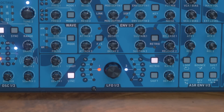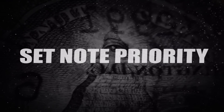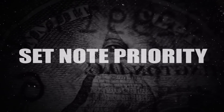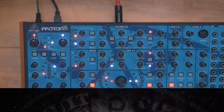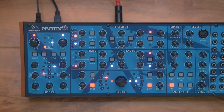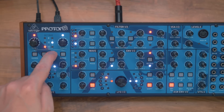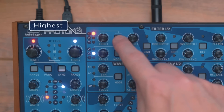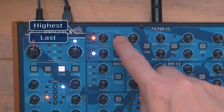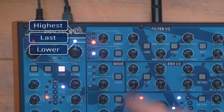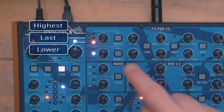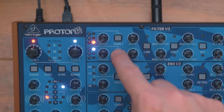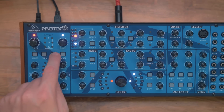To set note priority, press and hold the sync button and use the mode 1 button to select the note priority for monophonic mode. The top LED sets it to highest note priority, the middle sets it to last note priority, and the lower LED sets it to lowest priority. The same applies for the mode 2 button, but that sets the priority for the paraphonic mode.